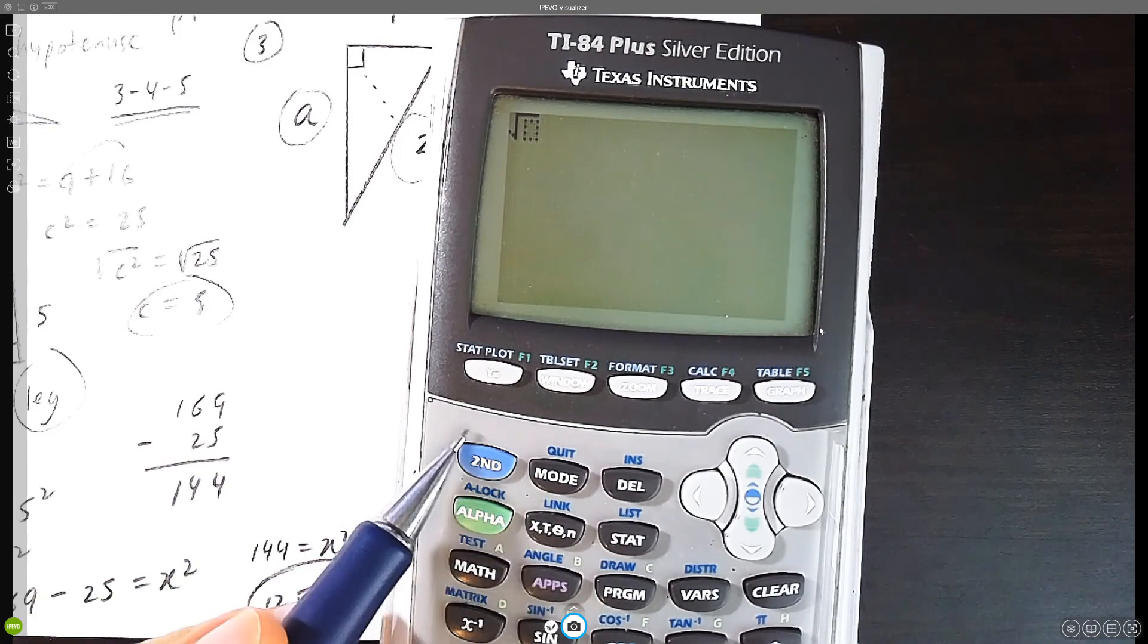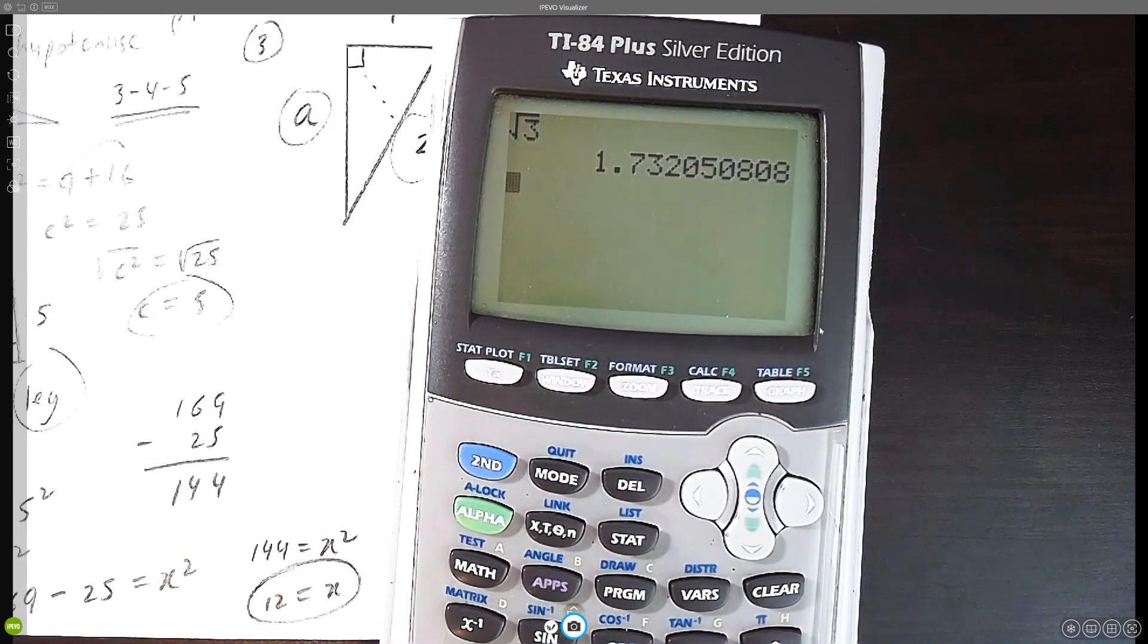Second square root. You might have to press shift, square root of three, enter. It's approximately 1.73. It's just a number.